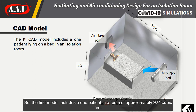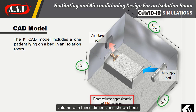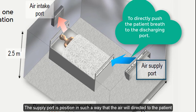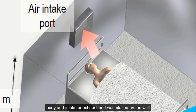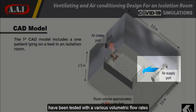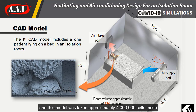The first model includes one patient in a room of approximately 924 cubic feet volume with the dimensions shown here. The supply port is positioned so that the air will be directed to the patient's body, and the intake or exhaust port was placed on the wall right above the patient's head. Different angles of air supply have been tested with various volumetric flow rates, and this model was taking approximately 4 million cells in the mesh.